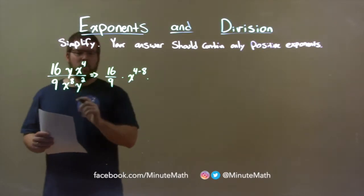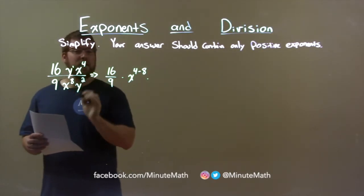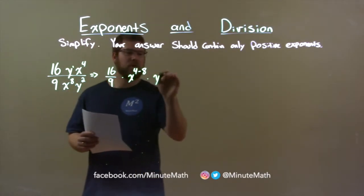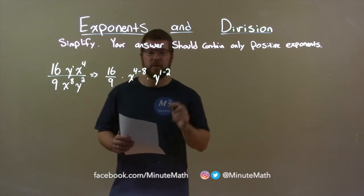Let's look at the variable y. Remember, this y is y to the 1st power. So we have y to the 1st divided by y squared, and that's y to the power of 1 minus 2. Again, we subtract the exponents.